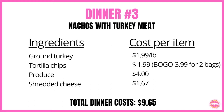Dinner number three is nachos with turkey meat. Again using the ground turkey at $1.99 a pound for a different meal. Tortilla chips were buy one, get one free — $3.99 for two bags. You'll need some produce to go on top of your nachos, whether it's lettuce, tomatoes, cilantro, onion, jalapenos — let's say that costs you $4. And they had shredded cheese on sale for $1.67. Dinner number three comes in at a total cost of $9.65.